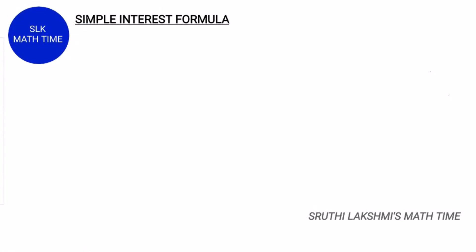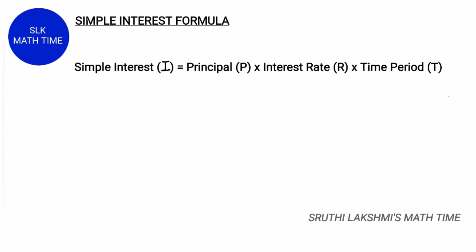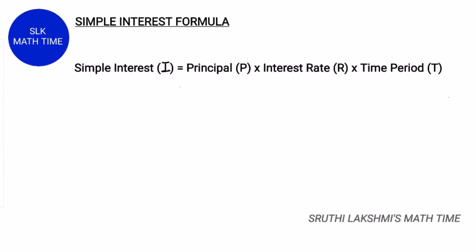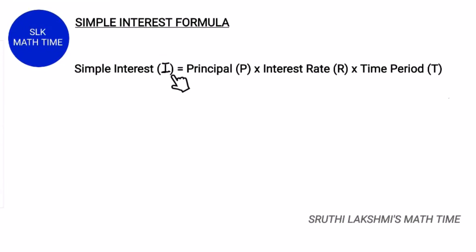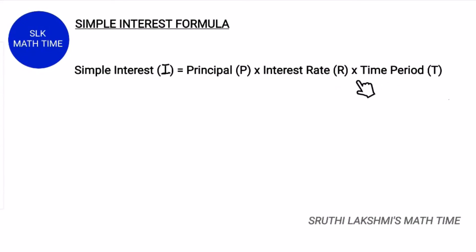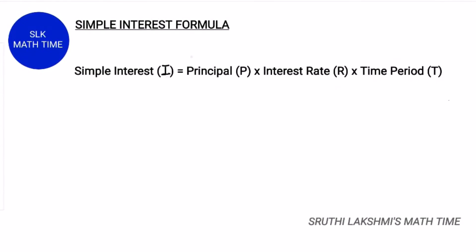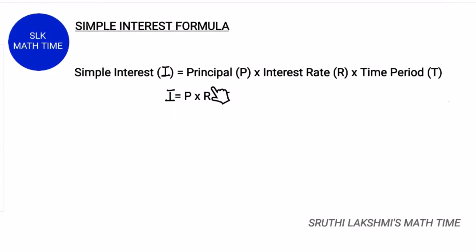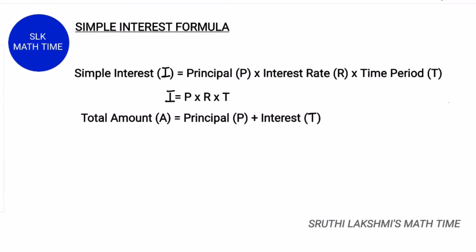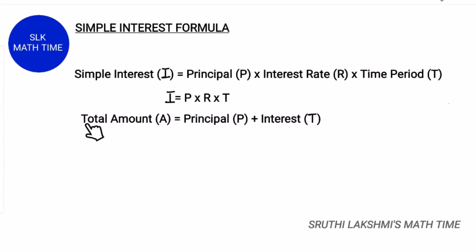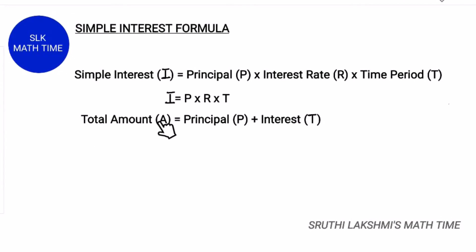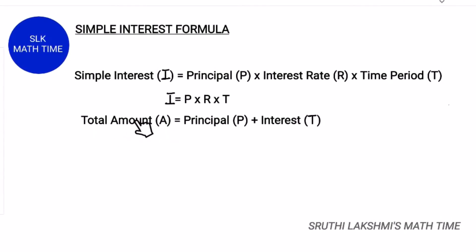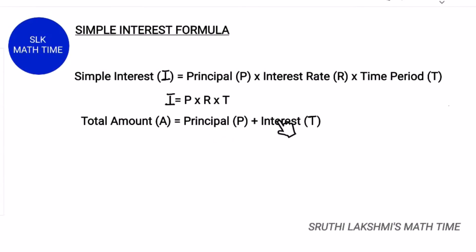Once you have determined the principal, rate, and time, you can use the simple interest formula, which is: simple interest, denoted by the letter I, equals principal times interest rate times time period — I = P × R × T. The total amount is represented by the letter A, and it equals the principal plus the interest.